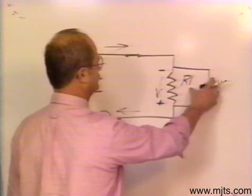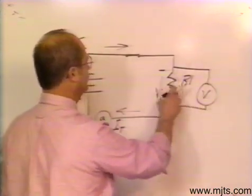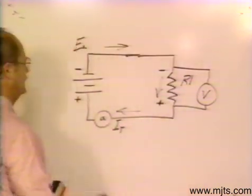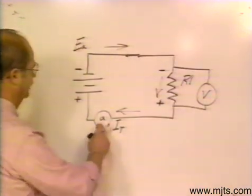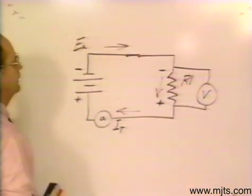In other words, the way I have this voltmeter applied to that resistor, I would measure the voltage drop across there. You always measure voltage across the circuit, and current into the circuit.